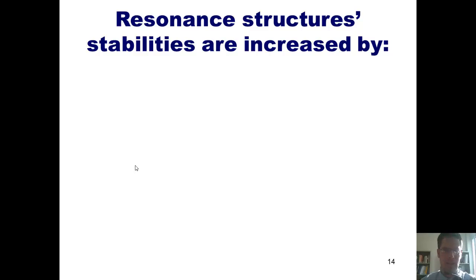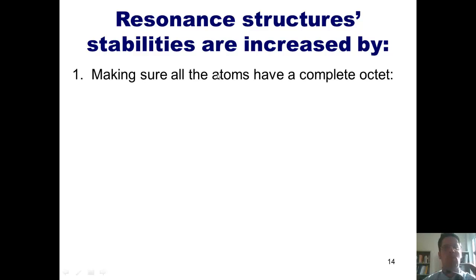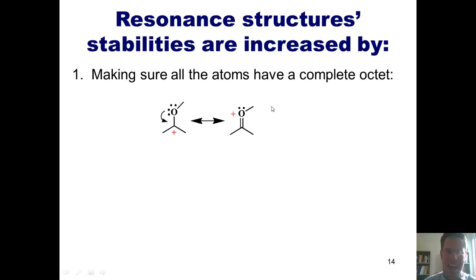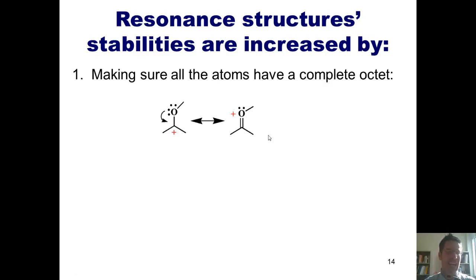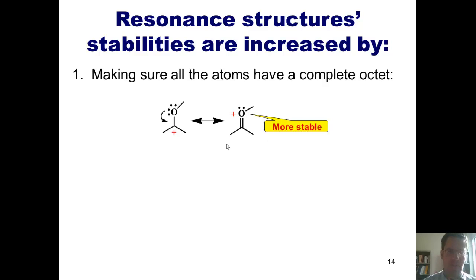Resonance structure stabilities are increased by the following rules. Rule one: making sure that all atoms have a complete octet. Here's an example resonance structure. The one on the left and the one on the right both have a positive charge. However, in the one on the left, the carbon here only has six electrons around it, whereas the one on the right it has all eight. The oxygen has eight electrons around it in both examples. The most stable resonance contributor is the one on the right, because all atoms in it have full octets.